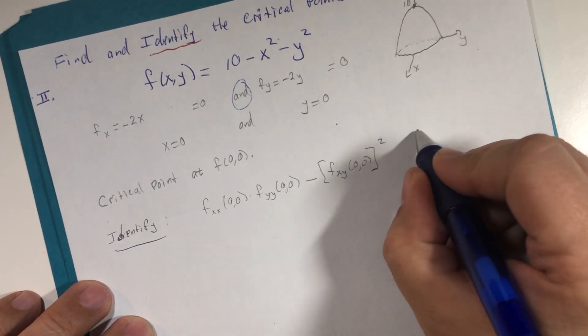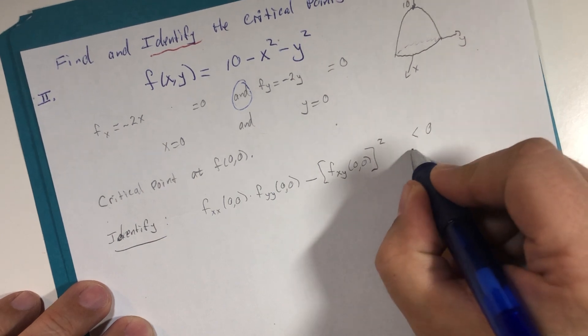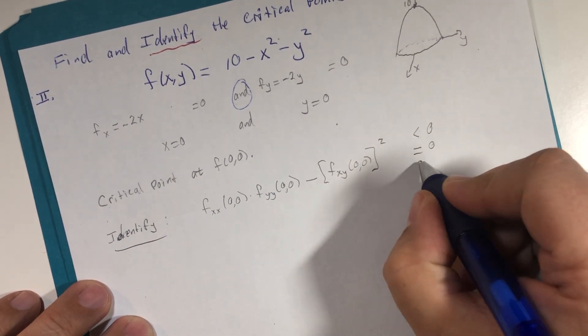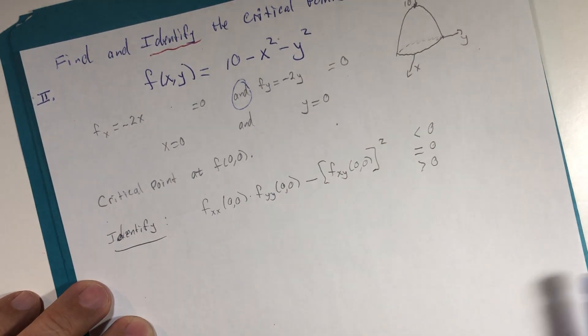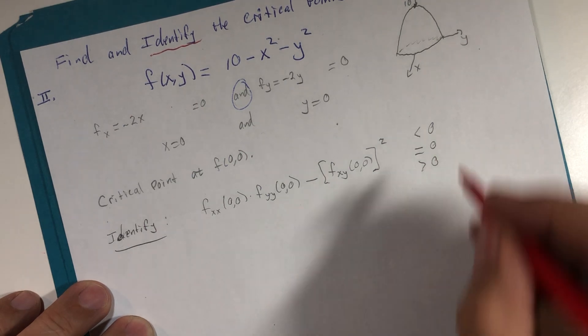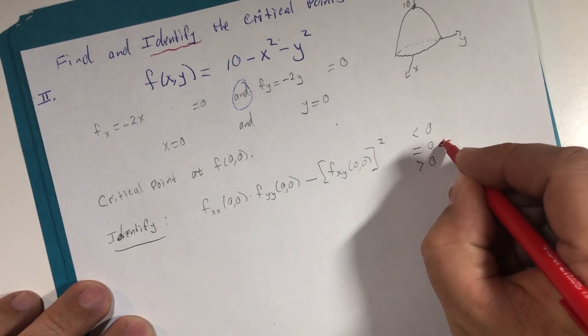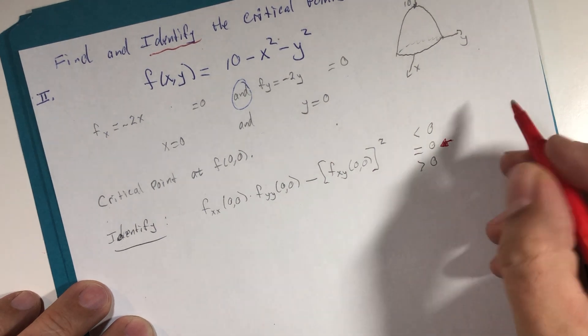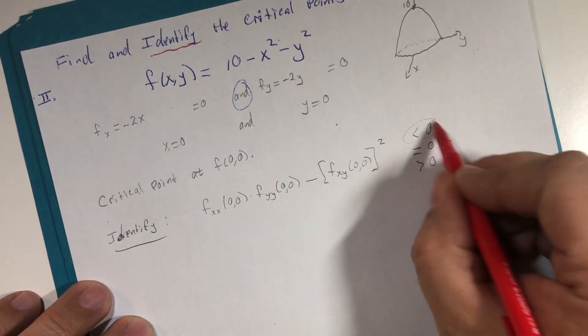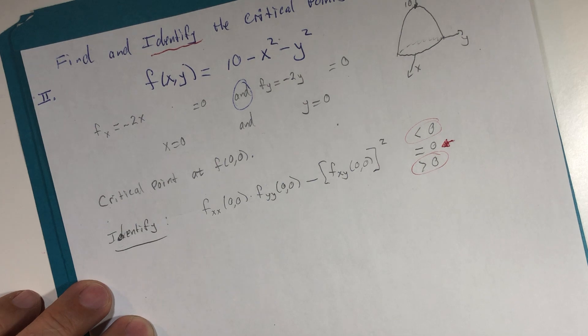And then we're either looking to see if this is less than zero, equal to zero, or greater than zero. And we're really not going to pay attention to this case right now, which is the inconclusive case. We're going to focus on these two. All right. So let's find the second partial derivatives.